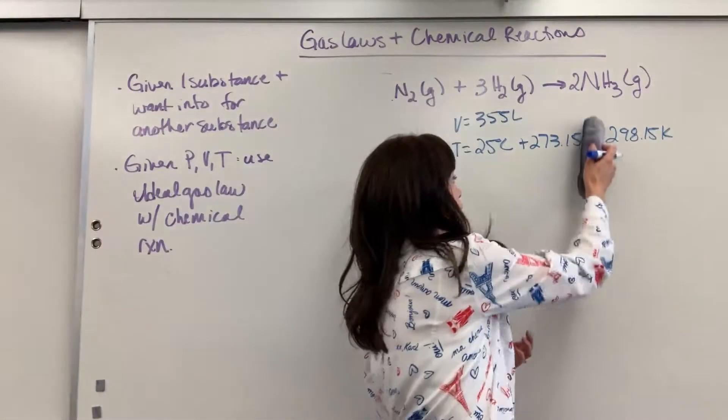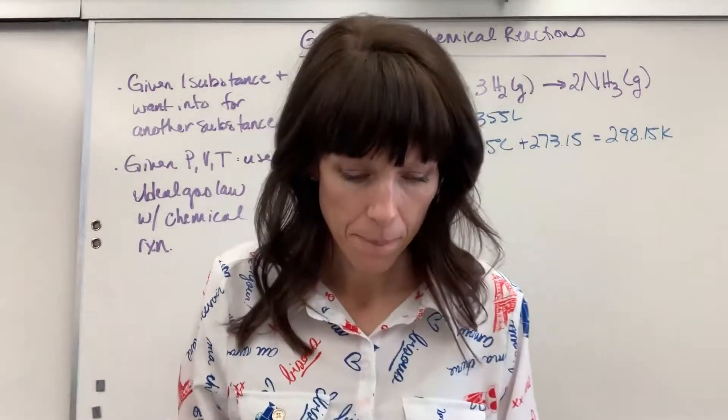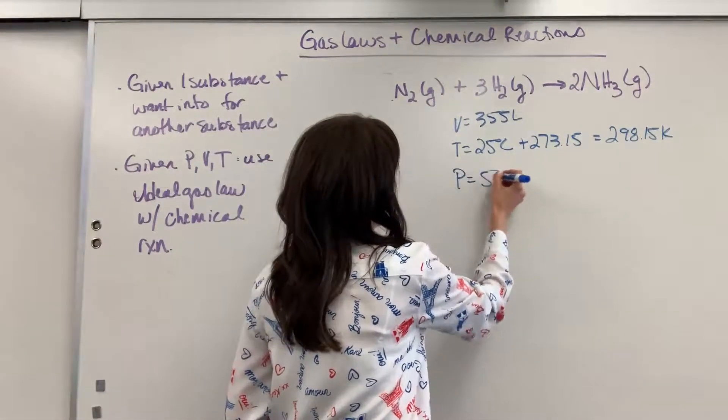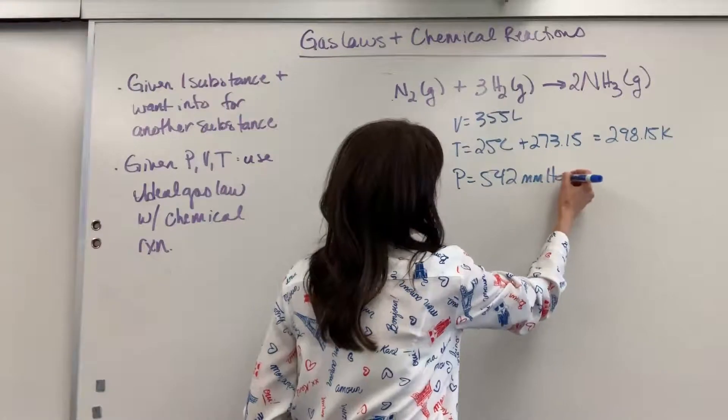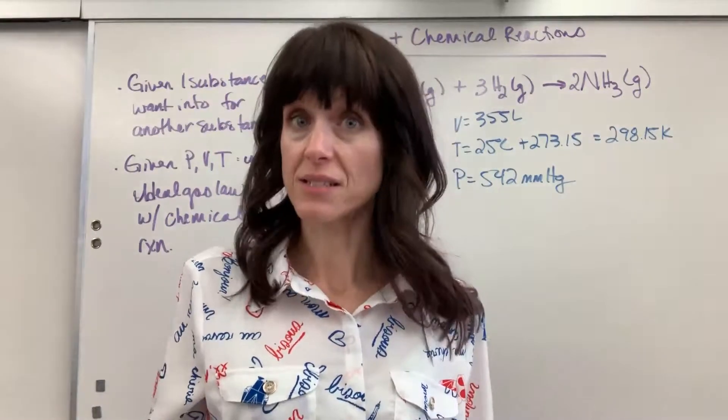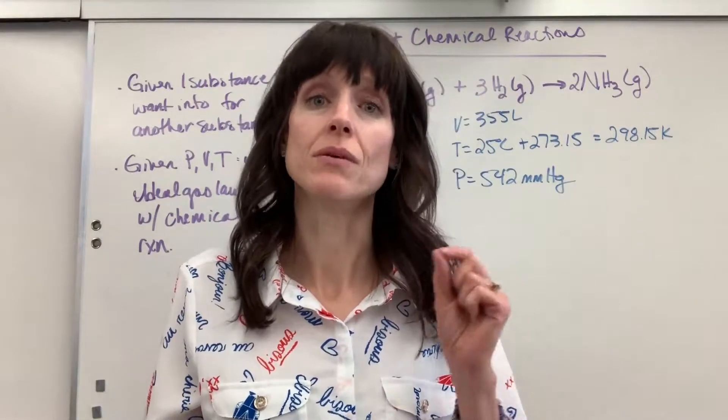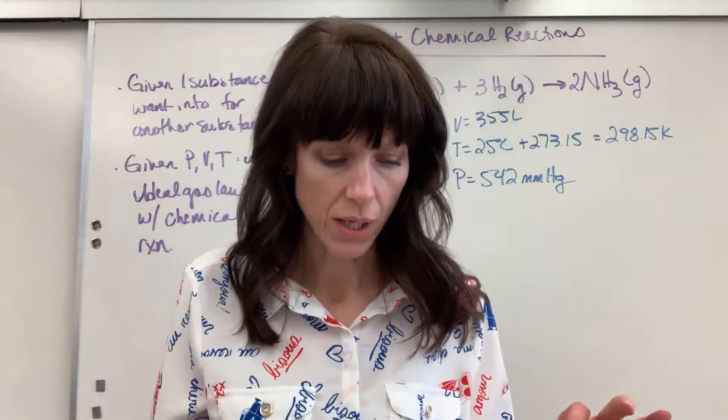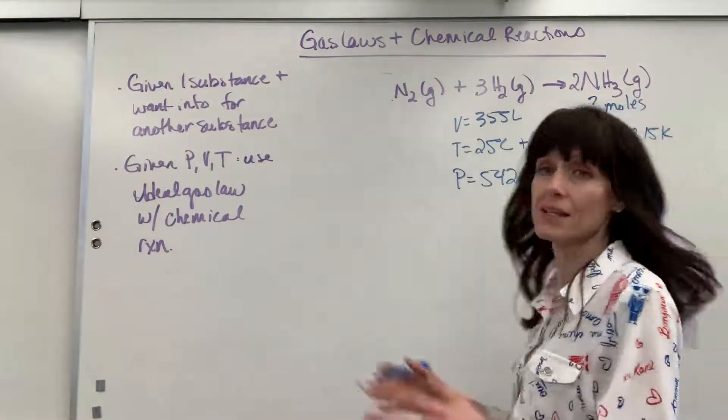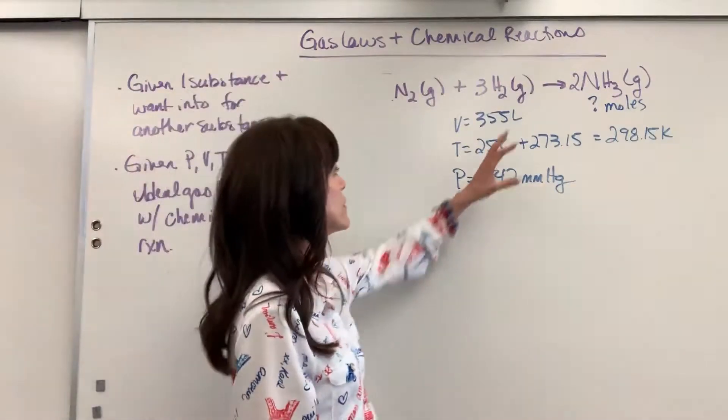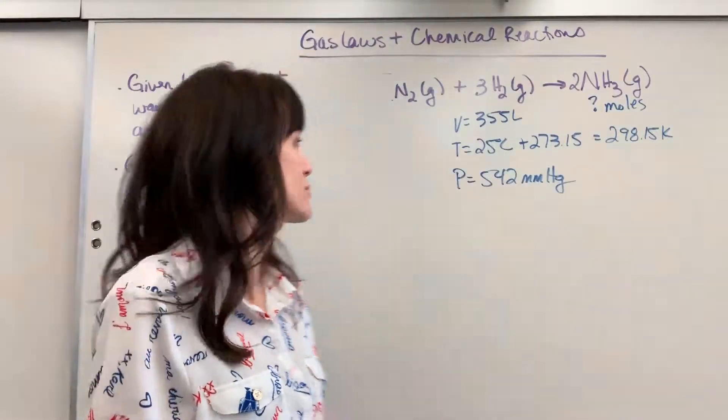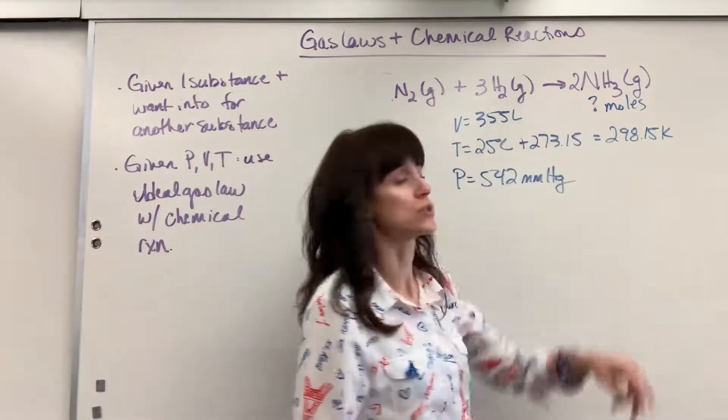And a pressure of 542 millimeters of mercury. Now here's the significant part: it says it's combined with excess nitrogen. What amount of ammonia in moles can be produced? This is what grabs me first. Number one, they're giving me all the information about hydrogen, but they want the answer for ammonia. So I know we have to do stoichiometry. We're going to have to walk that bridge—three moles of hydrogen produces two moles of ammonia.